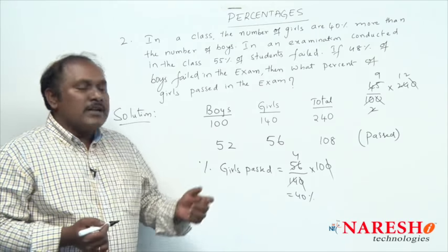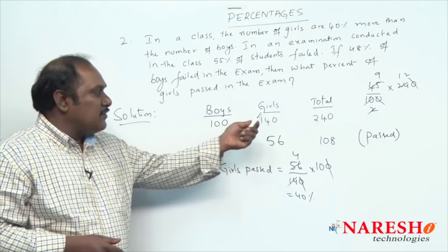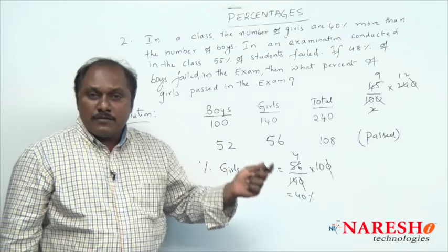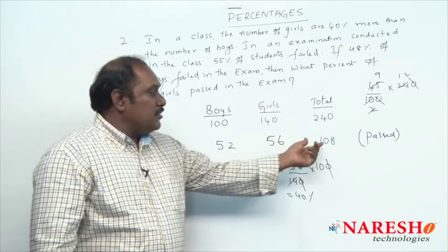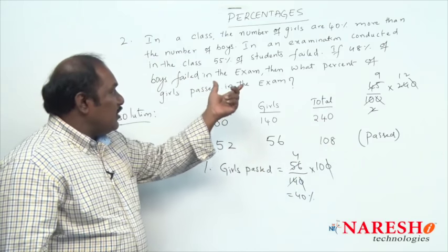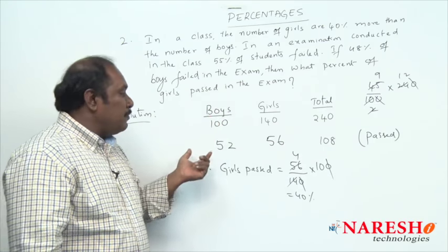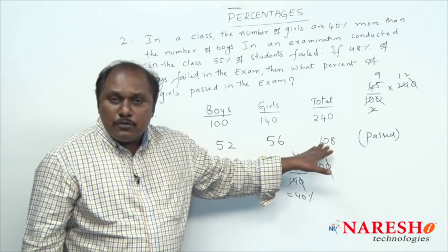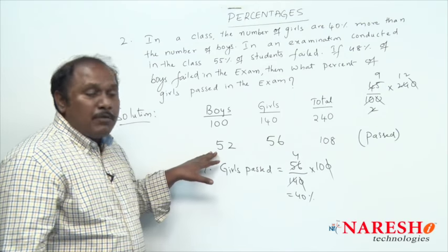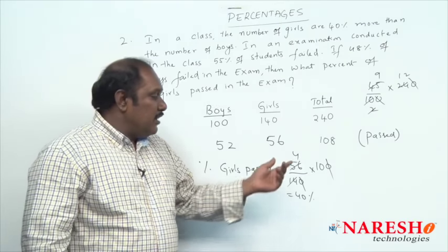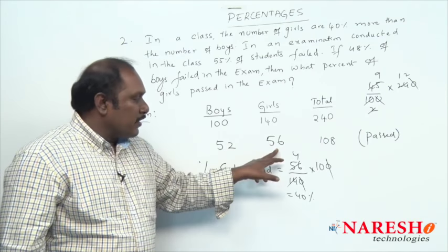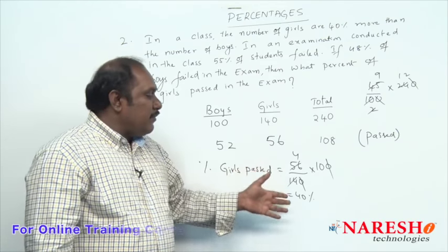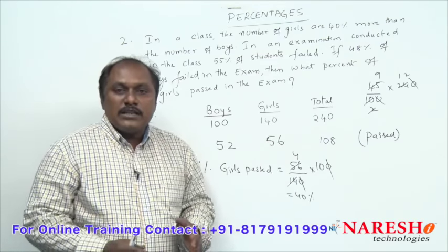This is the simplest way to answer this question. Assuming boys as 100, girls are 140, and total strength is 240. 55 percent of students failed, so 45 percent passed. 45 percent of 240 is 108. 48 percent of boys failed, so 52 percent of boys passed, which is 52 out of 100. Out of 108 students who passed, 52 are boys, so 56 are girls. 56 out of 140 is 40 percent.